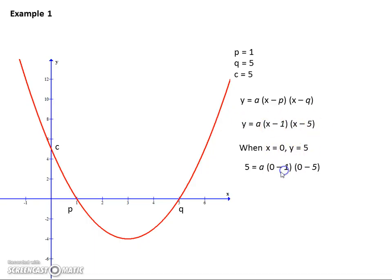So you put that in the equation and we work out that a equals one. So our final answer when we expand is equal to one times (x minus one)(x minus five) which is x squared minus 6x plus 5.